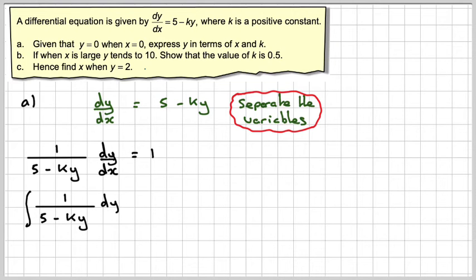Then integrating both sides with respect to x, this side will become the integral of 1 over 5 minus ky dy, and this will be the integral of 1 dx.